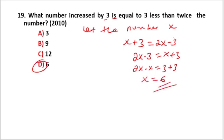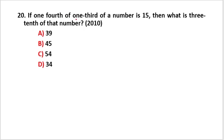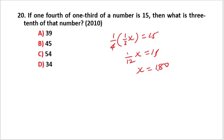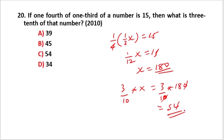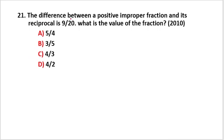The value of x is 6. Next problem: if one-fourth of one-third of a number equals 1, then we have 1 over 12 times x equals 1, so x equals 12. Then what is 3 tenths of the number? 3 tenths times x.